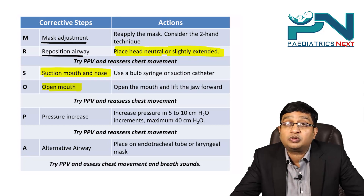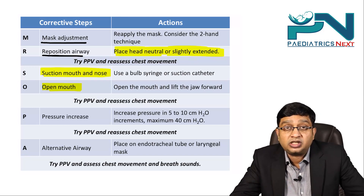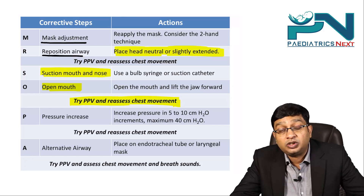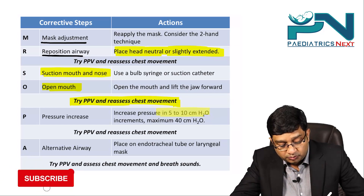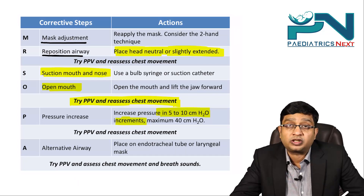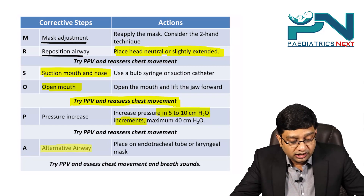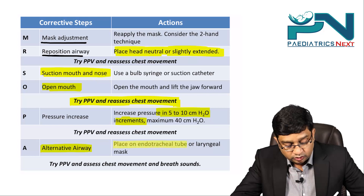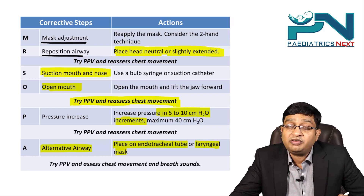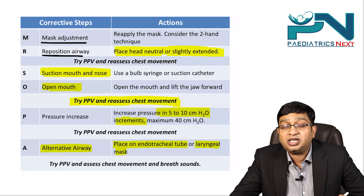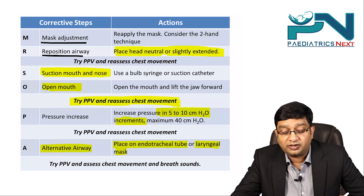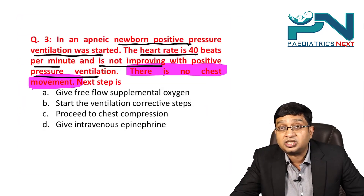Ensure open mouth — you can lift the jaw forward. Reassess chest movement. If still no movement, increase pressure in increments of 5 to 10 centimeters of water, up to a maximum of 40 centimeters. If still no chest movement, you need an alternative airway — either an endotracheal tube or laryngeal mask. So if PPV is given, heart rate remains low, and there is no chest movement, start the ventilation corrective steps.